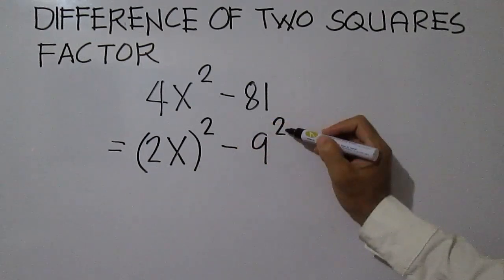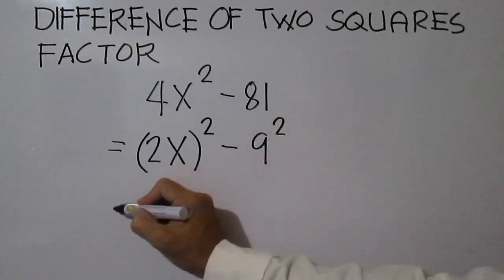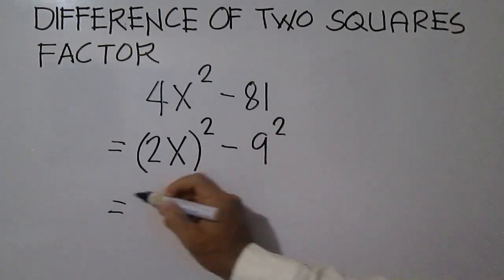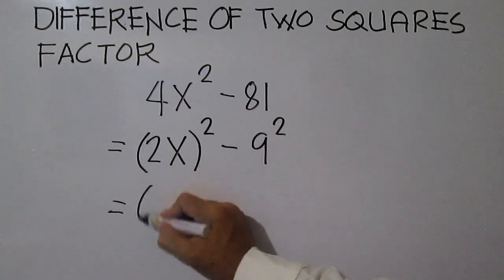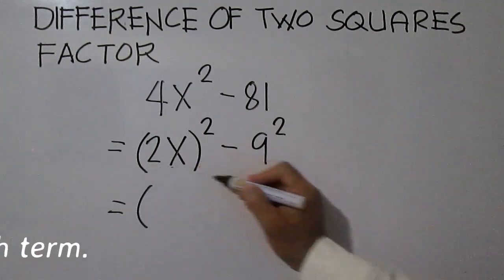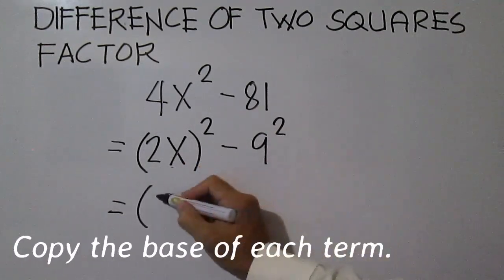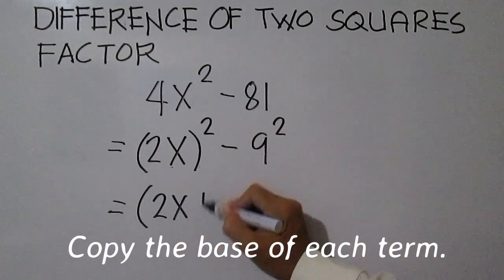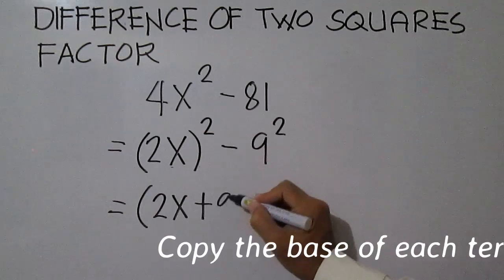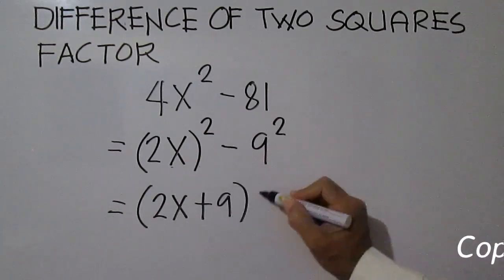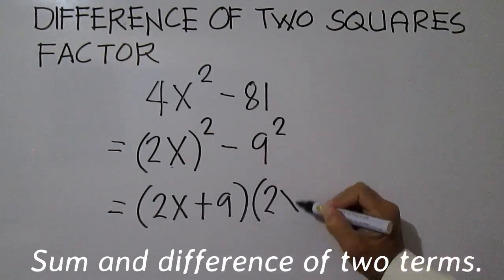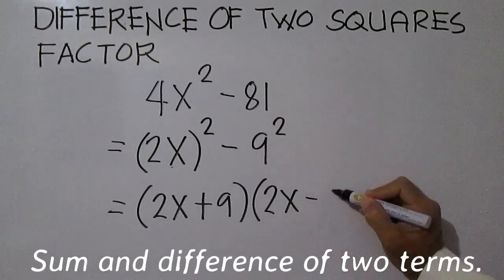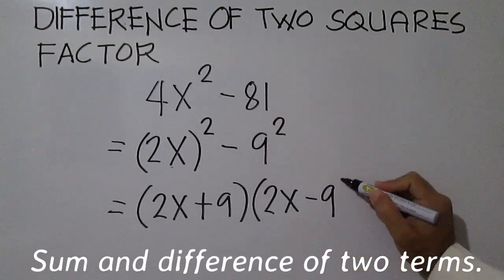We have a squared minus b squared form. So, the factors are 2x plus 9 — just copy the base — and the other factor is 2x minus 9.